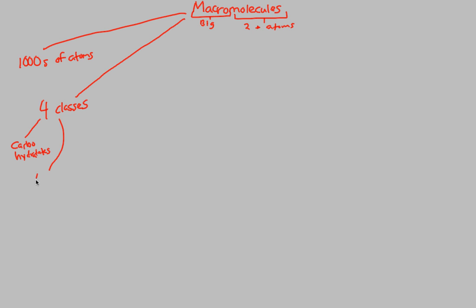The next type are lipids — a common way of referring to lipids is fats. The next type are proteins. And the last one we'll talk about in this series is nucleic acids, which are a fancy way of saying DNA or RNA — genetic material. So we have carbs, lipids, proteins, and nucleic acids.